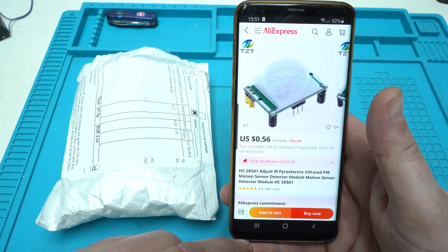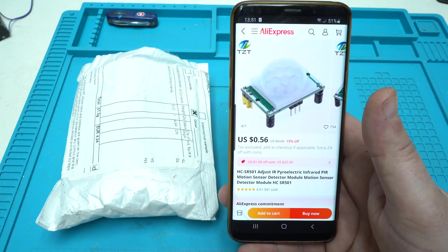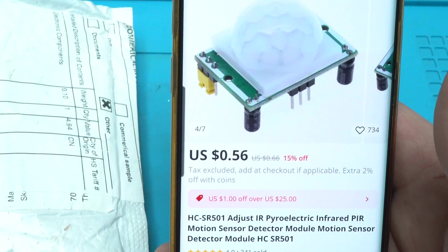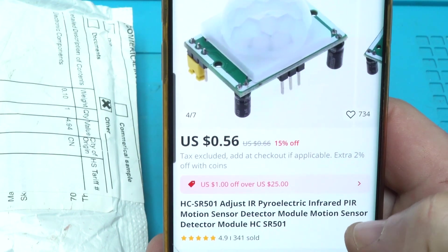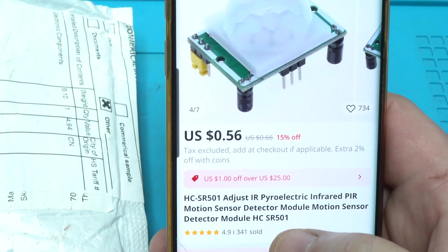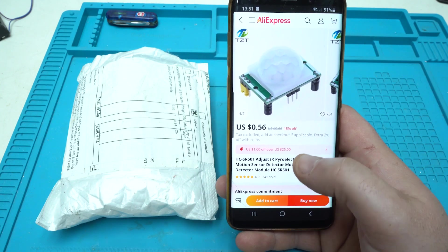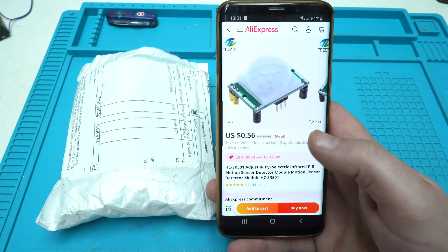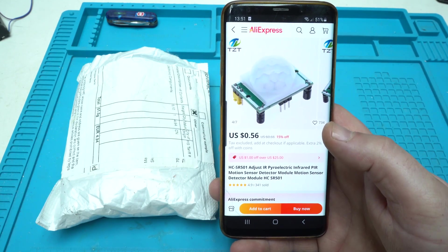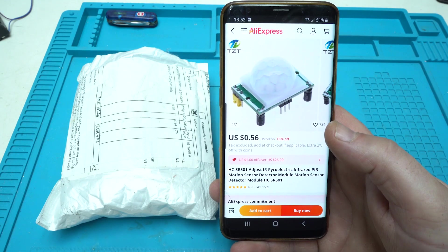Can you believe it? For 50 cents you can get this model. It's an infrared pyroelectric infrared motion sensor detector model, motion sensor detector model SR501. That's what it says on the title in AliExpress. This is a 50 cent very useful gadget. Let's take a review.